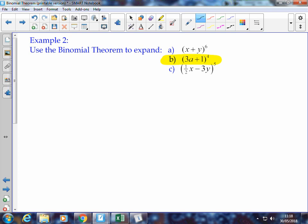We'll expand the expression 3a plus 1 to the power of 4 using the binomial theorem. So we'll just write that out, 3a plus 1 to the power of 4, and we can express that in the binomial theorem form.